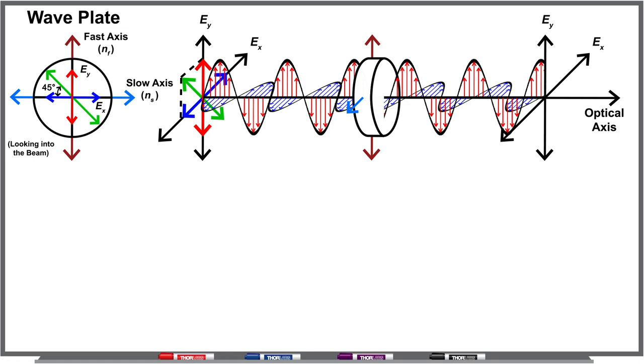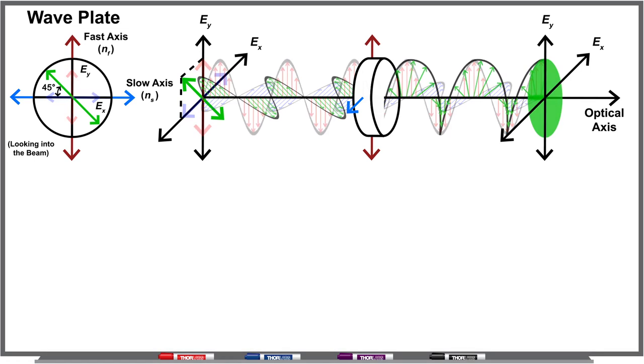The delay difference is one quarter of the light's wavelength, also referred to as a 90-degree phase difference. This 90-degree phase difference between the two components causes the transmitted light to become circularly polarized.